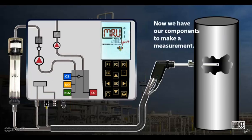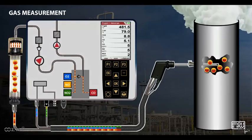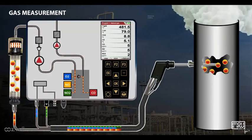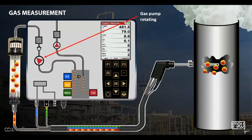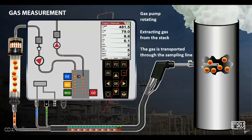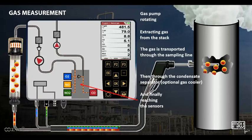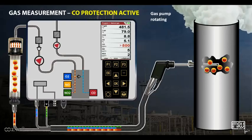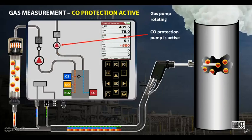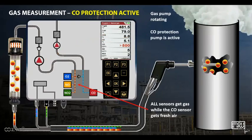Now we have our components to make a measurement. The gas pump rotates, extracting gas from the stack. The gas is transported through the sampling line, then through the condensate separator and optional gas cooler, and finally reaches the gas sensors. When CO protection is active, the CO protection pump is also rotating — all sensors get gas while the CO sensor gets fresh air.